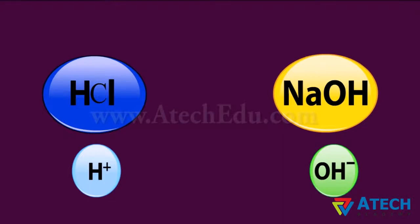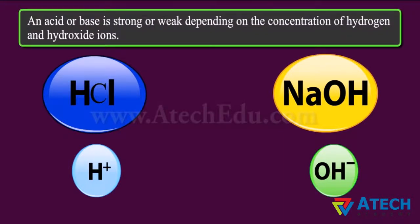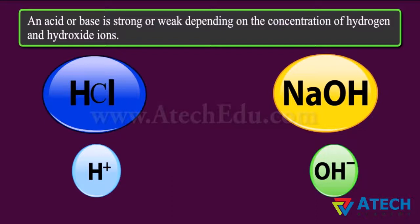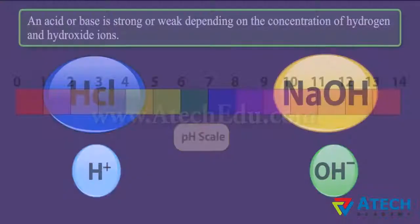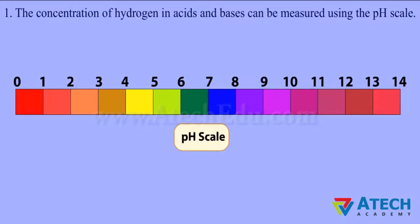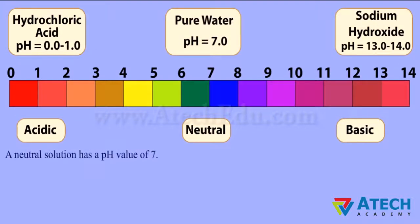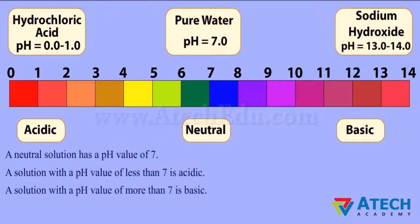An acid or base is strong or weak depending on the concentration of hydrogen and hydroxide ions. An acid like hydrochloric acid has hydrogen ions, while a base like sodium hydroxide has hydroxide ions. The concentration of hydrogen ions in acids and bases can be measured using the pH scale, which was discovered by Danish biochemist Sorensen in 1909. The pH scale has a range of 0 to 14. A neutral solution has a pH value of 7, a solution with pH less than 7 is acidic, and a solution with pH more than 7 is basic.